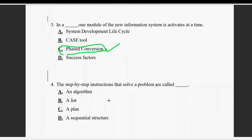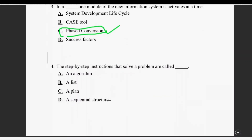Question number four: the step-by-step instruction that solves a problem is called what? If you have a problem and you have to solve it with step-by-step instructions, the definite right answer is algorithm.